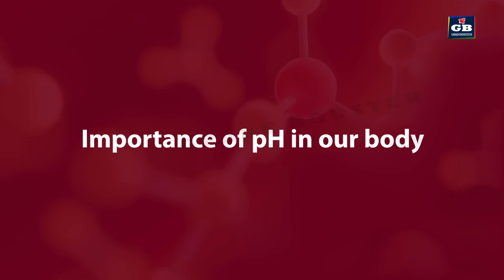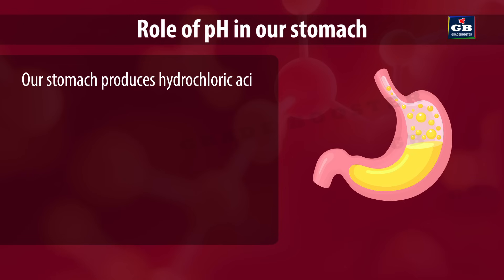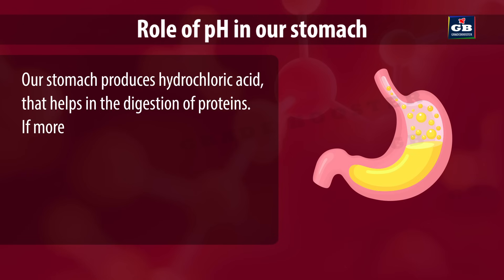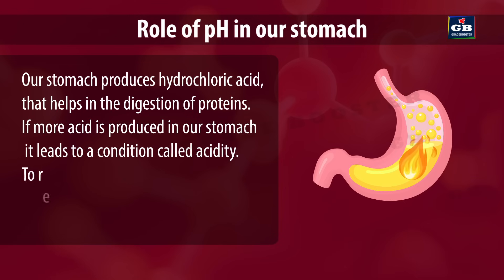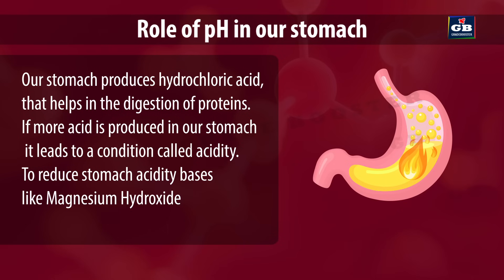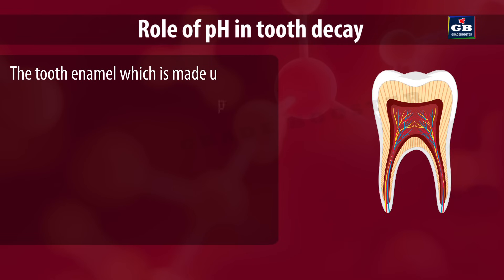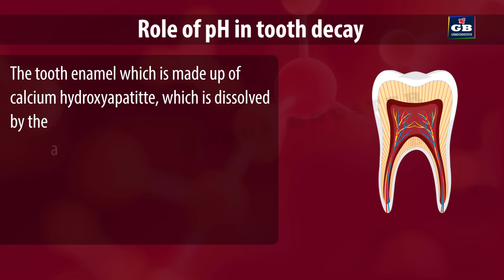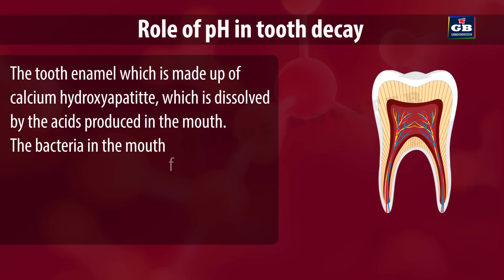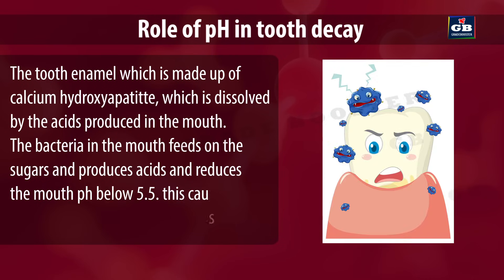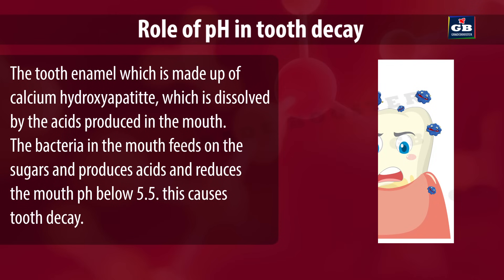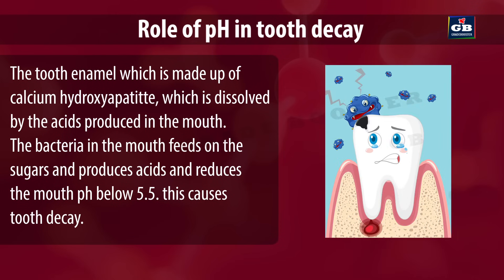Importance of pH in our body. Our stomach produces hydrochloric acid, which helps in the digestion of proteins. If more acid is produced in our stomach, it leads to a condition called acidity. To reduce stomach acidity, bases like magnesium hydroxide are used as antacids. The tooth enamel, which is made up of calcium hydroxyapatite, is dissolved by acid produced in the mouth. Bacteria in the mouth feed on sugars and produce acids which reduce the mouth pH below 5.5, causing tooth decay.